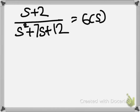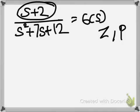In this example I have the transfer function (s + 2) / (s² + 7s + 12). I need to obtain the zeros and poles of this given transfer function. The zeros of a transfer function are the roots of the numerator. So in this transfer function the numerator is s + 2, and we find the roots of s + 2 to get the zeros.